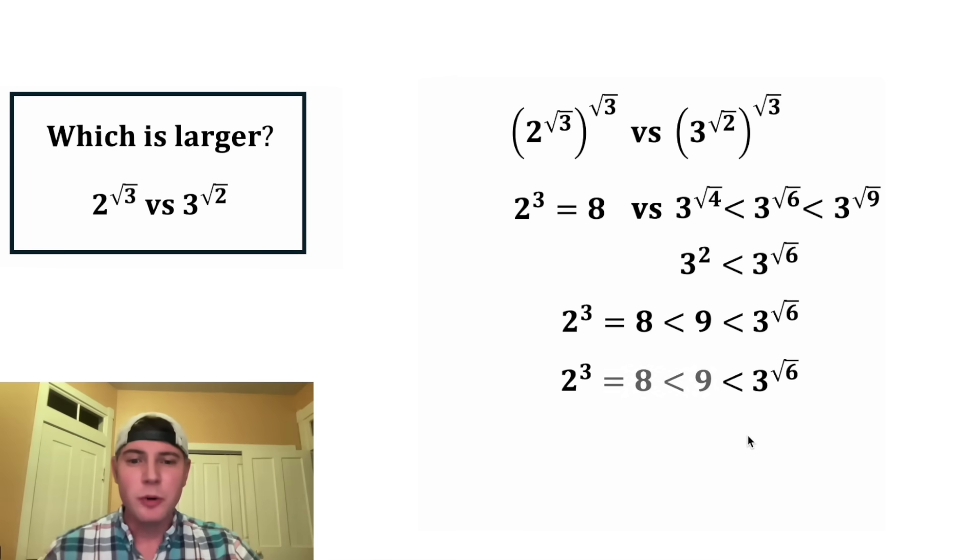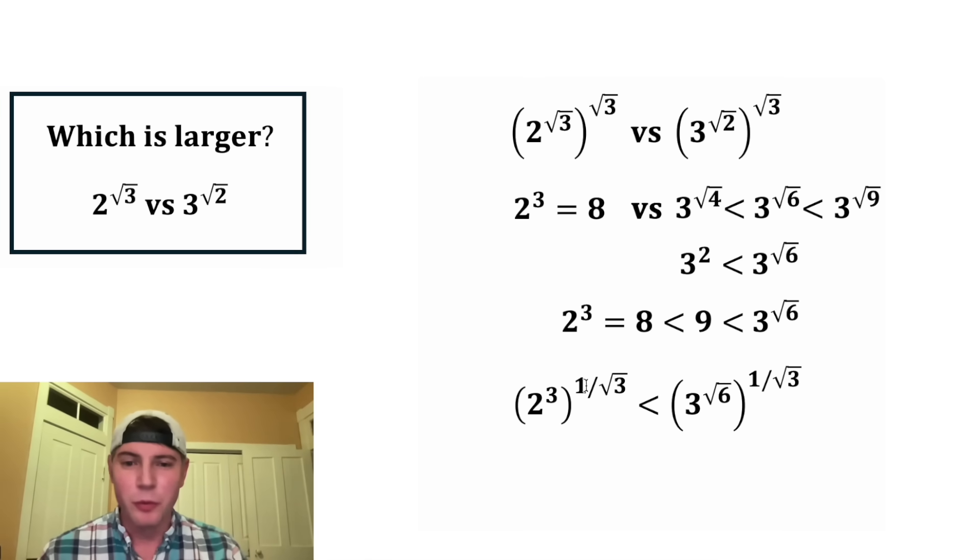Let's copy this down. And this will only be true if 2 cubed is less than 3 to the root 6. And then from here, if we do exponents to both sides of 1 divided by square root of 3, that's going to undo what we did here. And now we know that 2 to the square root of 3 is less than 3 to the square root of 2. And this is the answer to our question. Let's put a box around it. How exciting.